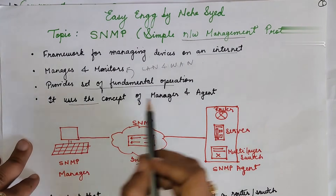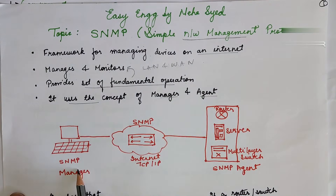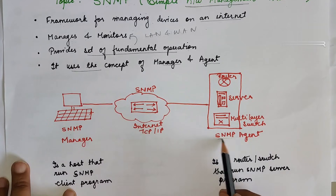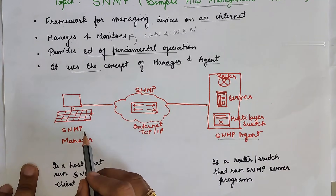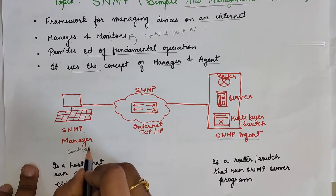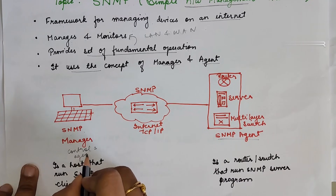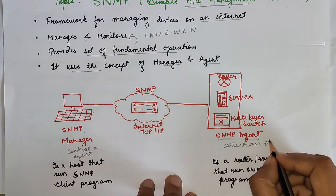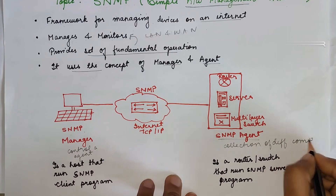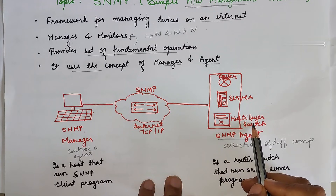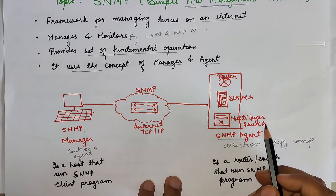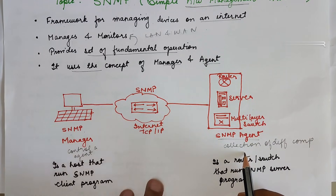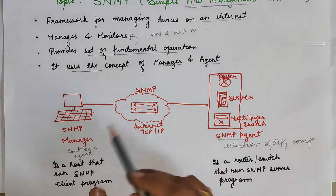SNMP uses the concept of manager and agent. There is one SNMP manager and another is an SNMP agent. The SNMP manager controls the agent. The SNMP agent is a collection of different components — it can be a router, server, or multi-layer switch. So the SNMP agent is a collection of different components, and the SNMP manager controls this agent.